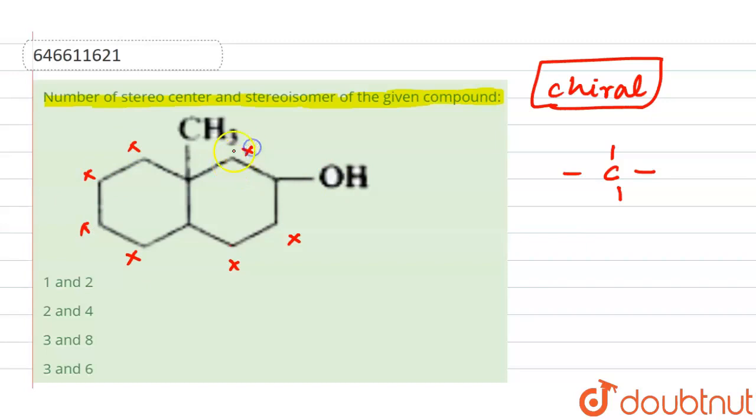This one will also not be our chiral carbon because here we will have two hydrogens. So our chiral carbons will be one, two, and three. We have three stereocenters.